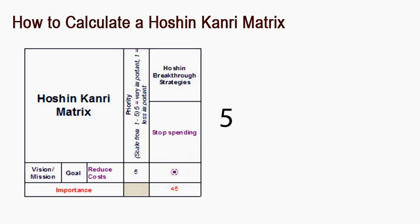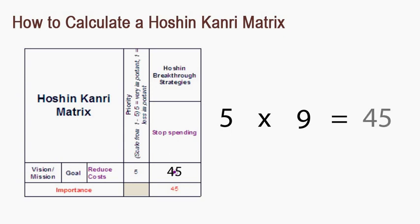5, the importance rating, times 9, the strength of the relationship, equals 45. So the value in the intersecting cell is 45. All of the values in each cell are then added up and documented at the bottom of each column.